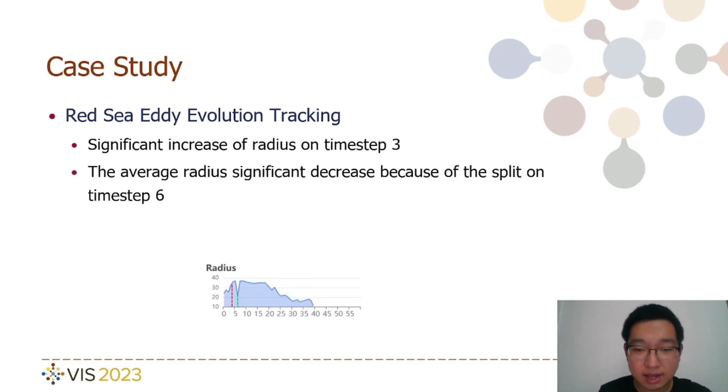The tracking graphic and the line graphic provide additional insights into the eddy's behavior. At timestamp 3, there is a notable increase in the eddy's radius following its merger with another eddy of the same type. Subsequently, the eddy's radius continued to increase. However, at timestamp 6, there was a significant decrease in the average radius due to the eddy's split. After the split and the subsequent merger, the radius remained relatively stable, only to decrease again at timestamp 21. Finally, the eddy gradually dissipated. These visualizations and graphics help depict the dynamic changes in the eddy's size and behavior over time, offering valuable insights for further analysis.